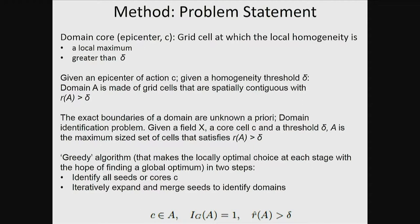From the beginning you don't know the boundaries of the domain, so you have to identify them. This is what's called a greedy problem in computer science, because there's no optimal choice a priori. We created an algorithm that makes a locally optimal choice at each stage and hopefully finds the global optimum. We identify seeds first, then expand and merge until we identify all domains.